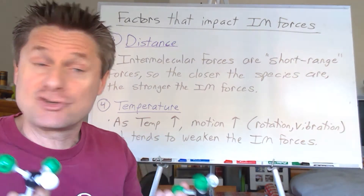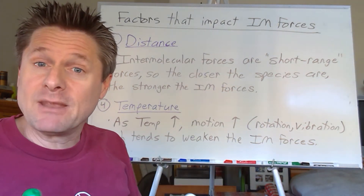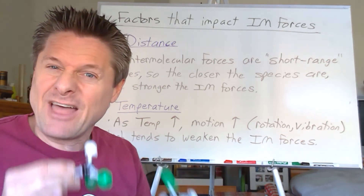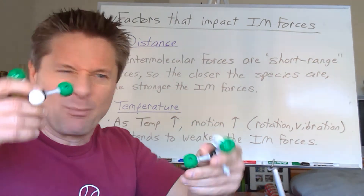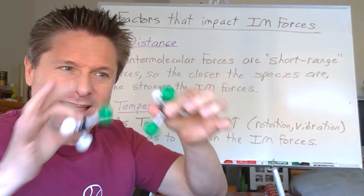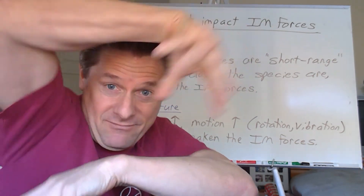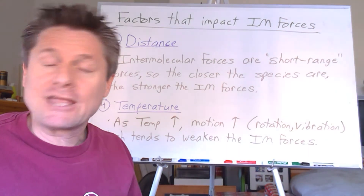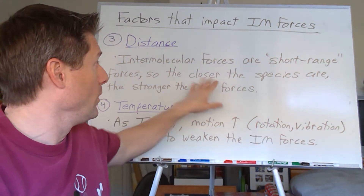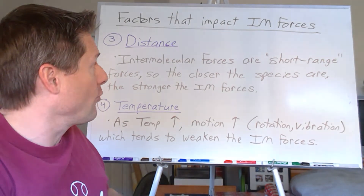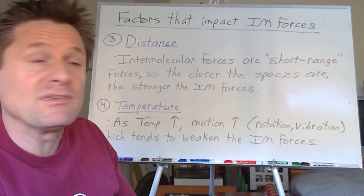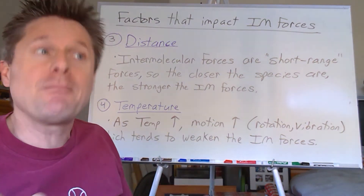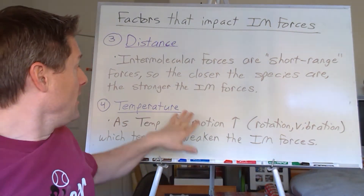Distance effects are particularly important for ions — the closer a cation and anion can get, the stronger the attraction, as described by Coulomb's law. We'll also look at molecular shape when we discuss organic molecules: some shapes allow molecules to stack closely together, while bulkier shapes prevent that. This is especially relevant when we cover London dispersion forces.